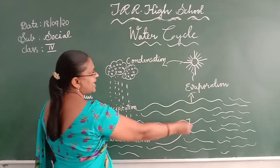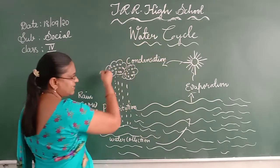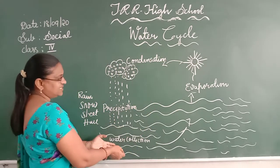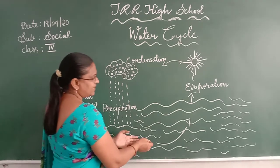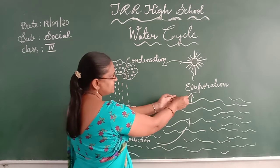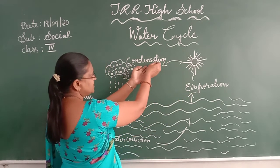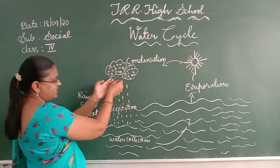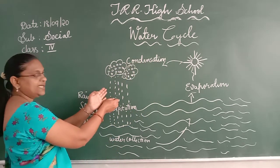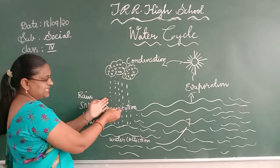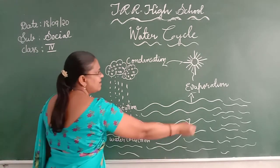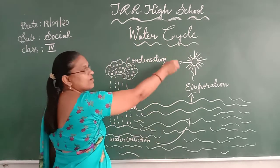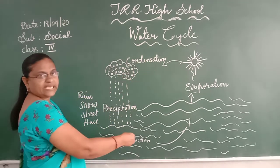The same thing happens again. When the water collects in the water bodies, again it evaporates, again it goes and becomes condensation, and again it comes down as rain, snow, or sleet. This is called the water cycle.